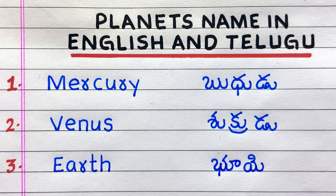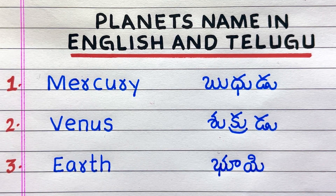The name of the first planet is Mercury. Mercury is called as Budhudu in Telugu.